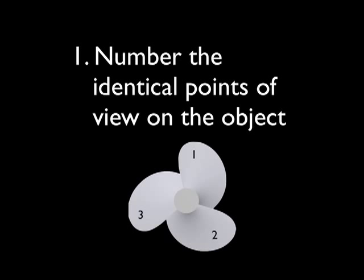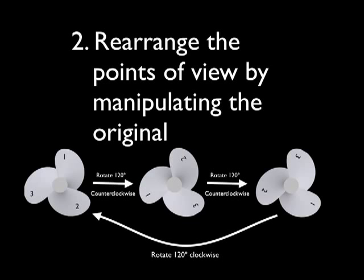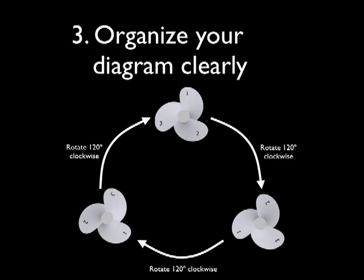First, number the locations of the object where viewers would stand to get the identical points of view. Second, move the object around to rearrange those points of view, those numbers, and record your work with connected copies of the drawing. Last, make the final diagram as presentable as possible. It ought to retain the symmetry of the original object, so you want to try to bring that out.